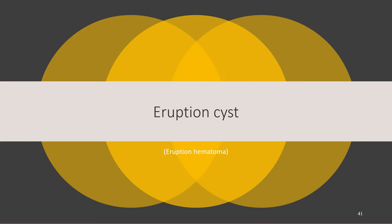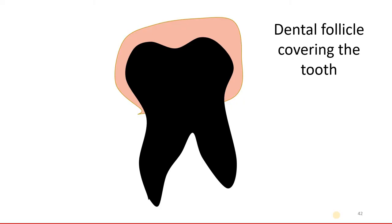As the tooth erupts, it may have a cyst around it which can pop out like a small bubble over the gingiva. Hence it is called an eruption hematoma also, because it gives rise to a bluish discoloration of the gingival tissue during eruption.